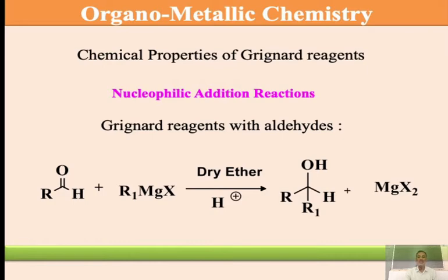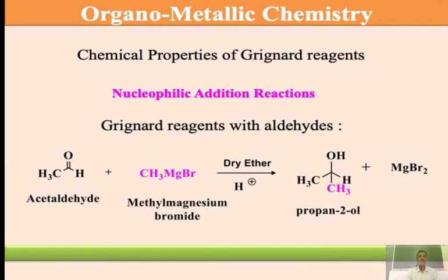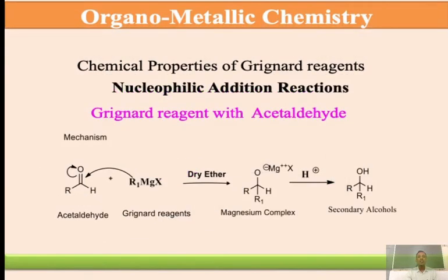For acetaldehyde, there is already one alkyl group and we add one more alkyl group. The mechanistic path is the same. A specific example: acetaldehyde is CH3 attached to a carbonyl carbon with H — we call this acetaldehyde. The Grignard's reagent used is methyl magnesium bromide, and in presence of dry ether followed by hydrolysis, it converts into 2-propanol (propan-2-ol), with MgBr2 as a byproduct.